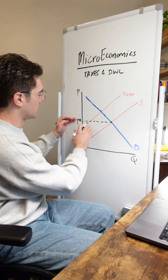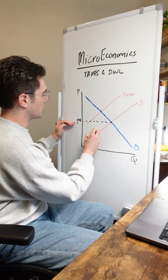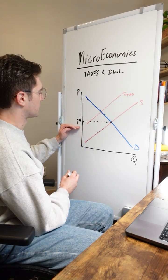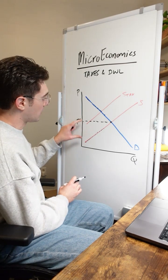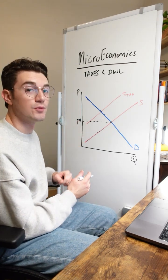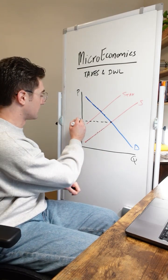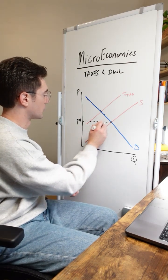All right, same goes for producer surplus, but on the flip. We've got all of these producers along these points right here that are willing to sell the good at these prices, but they're actually able to sell at this equilibrium price. So they're generating all these vertical distances of producer surplus, and the total of all of them together is this triangle right here of total producer surplus.